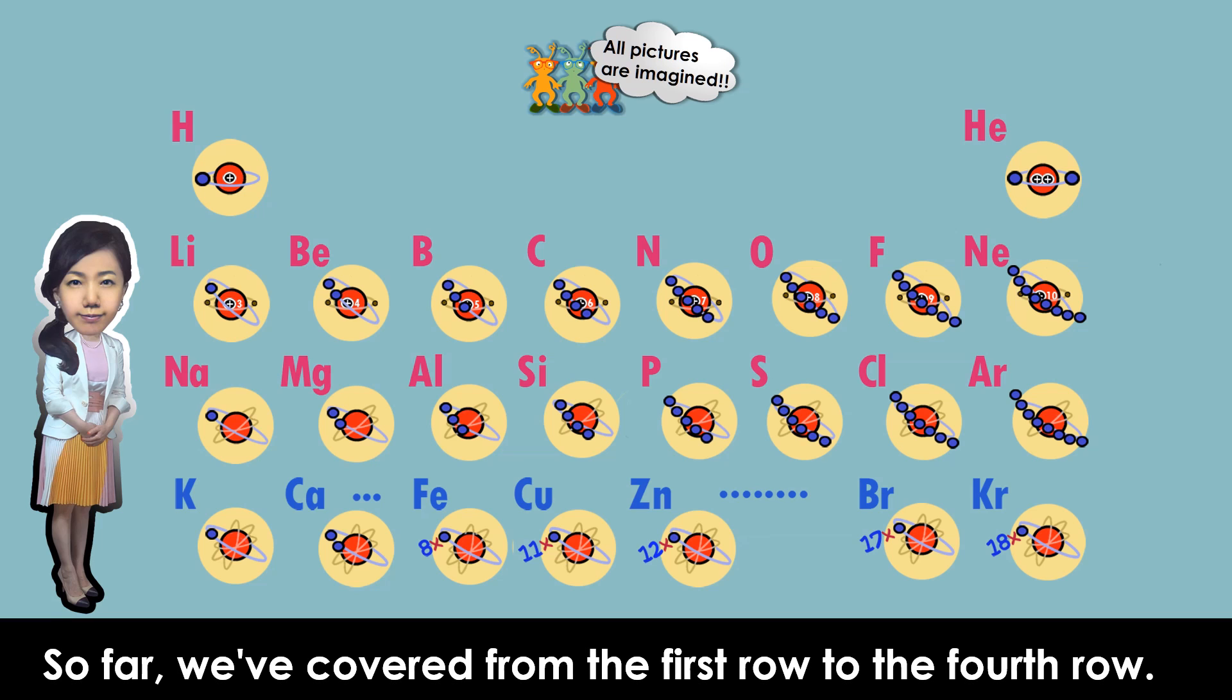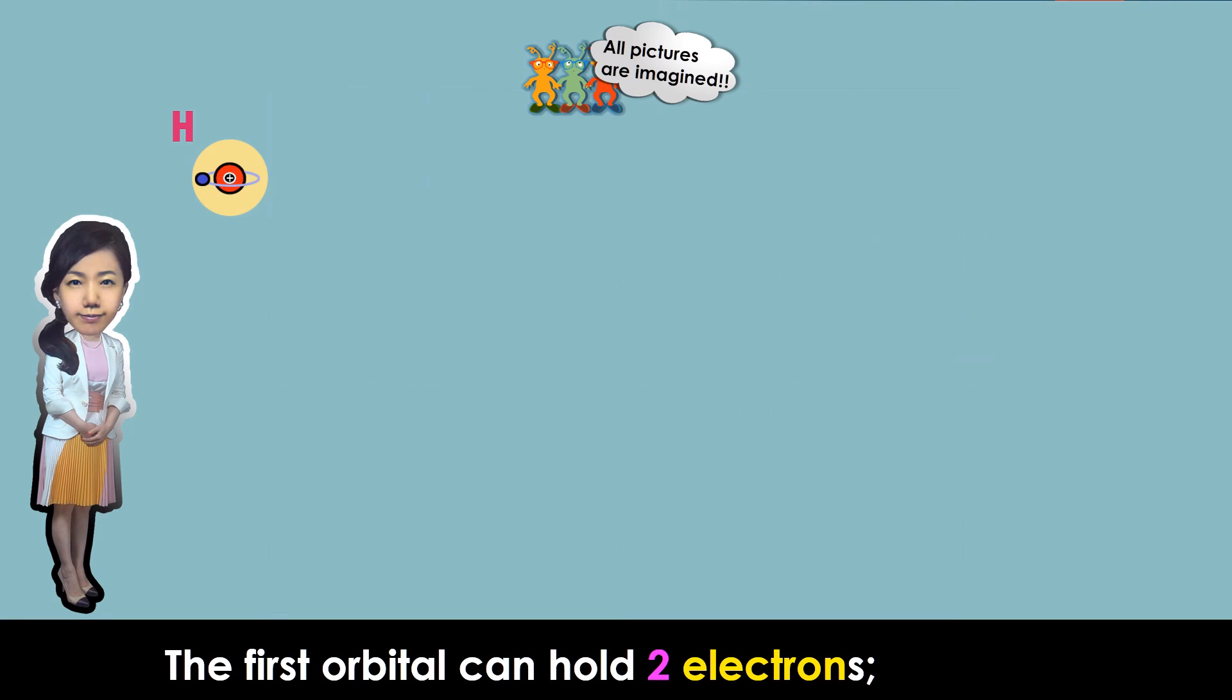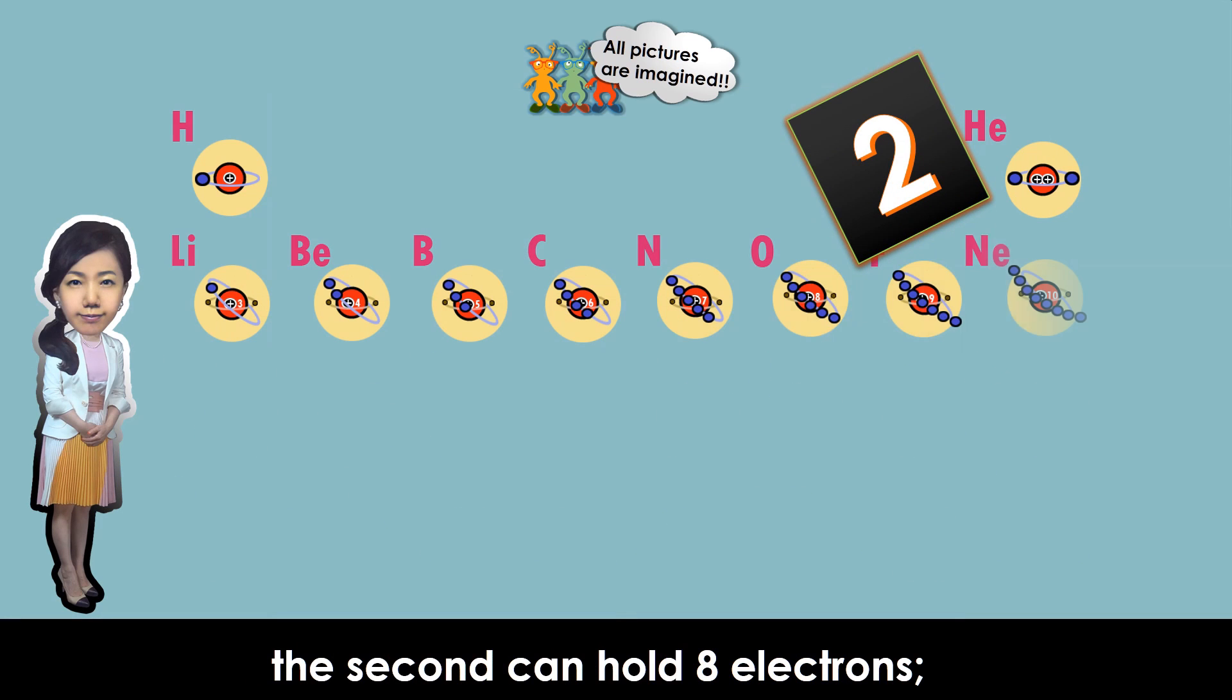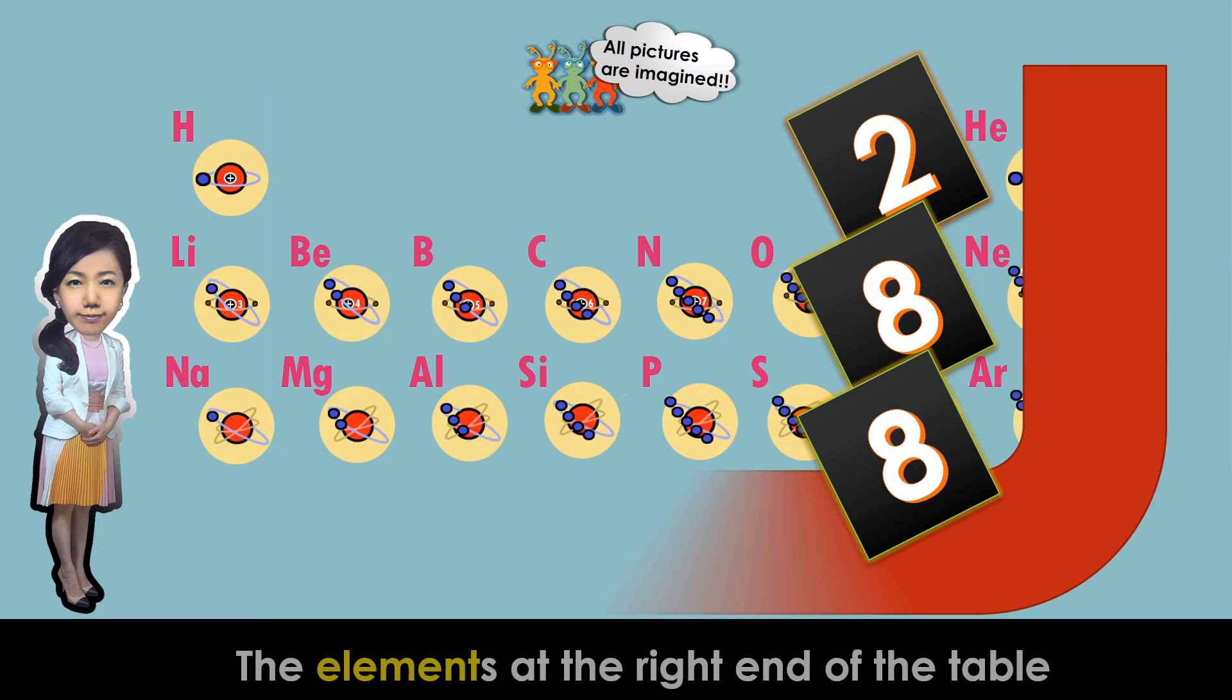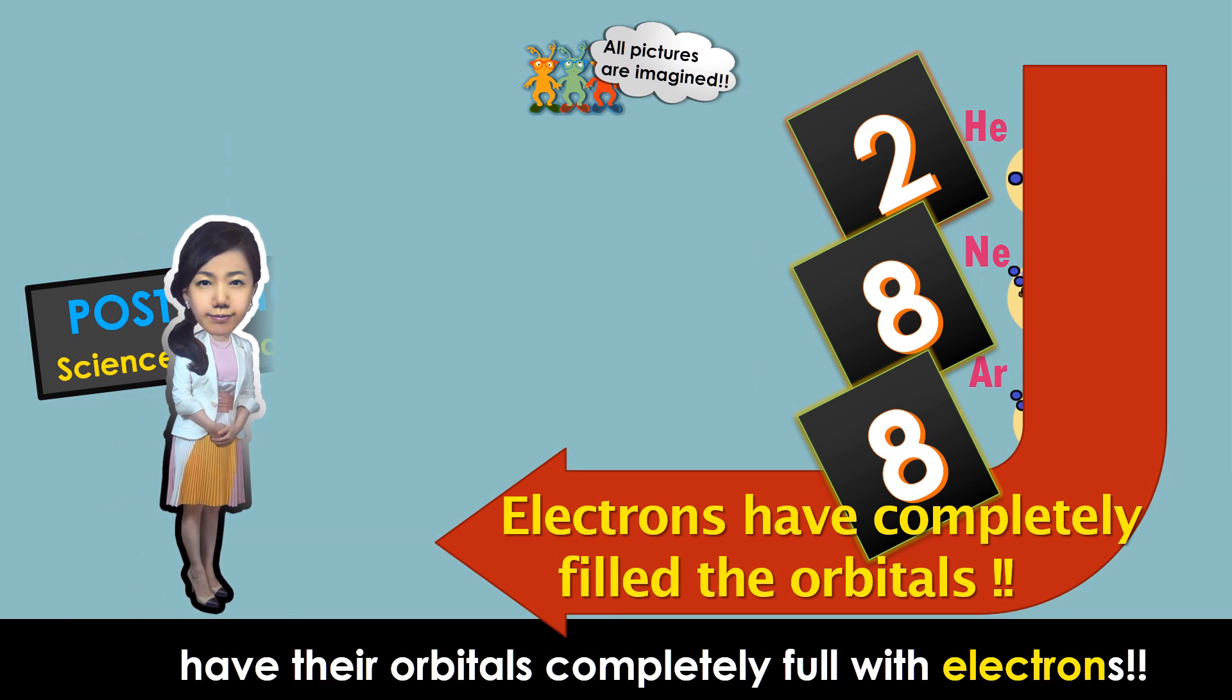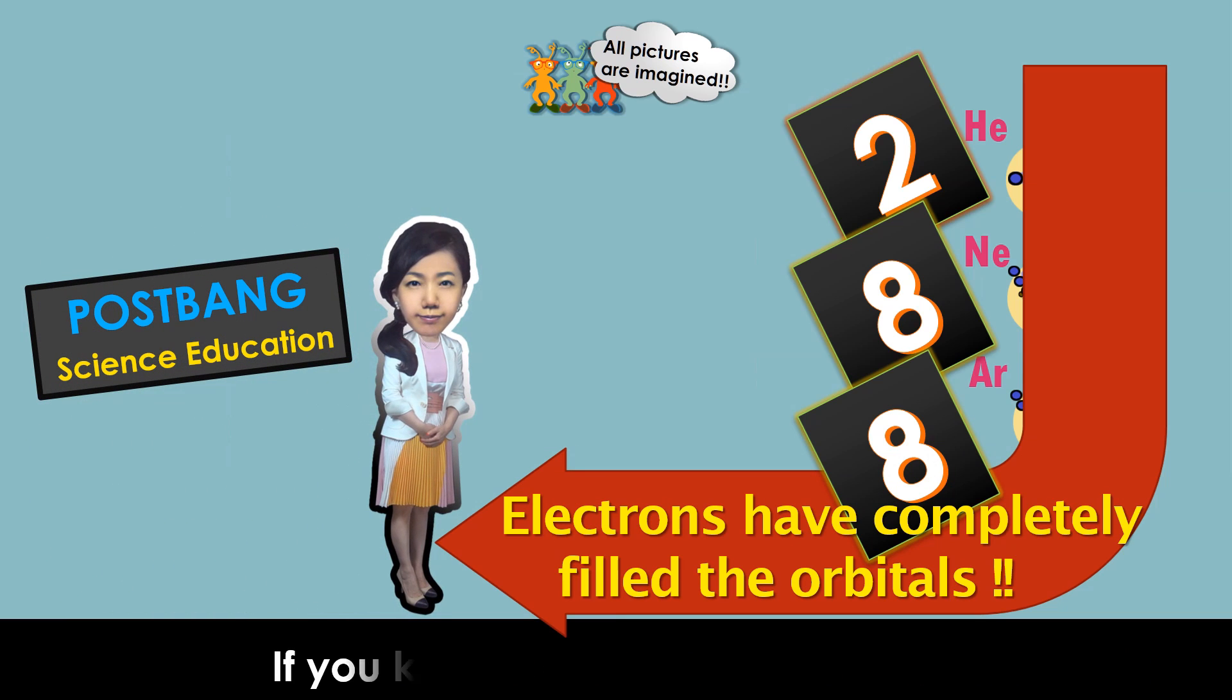So far we've covered from the first row to the fourth row. Let's wrap it up. The first orbital can hold two electrons. The second can hold eight electrons. The third can also hold eight electrons. The elements at the right end of the table have their orbitals completely full with electrons. If you know this much, you've understood the short periodic table.